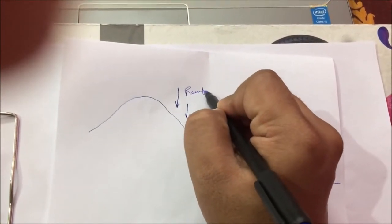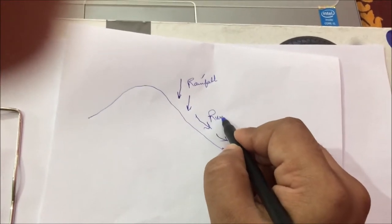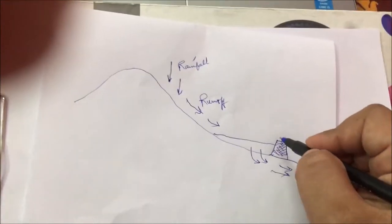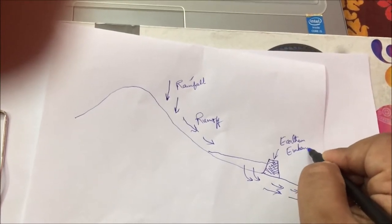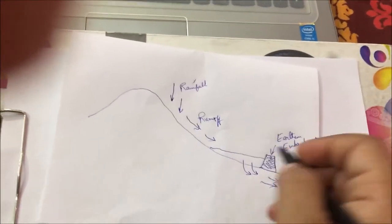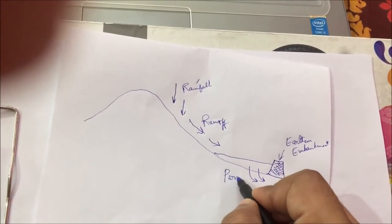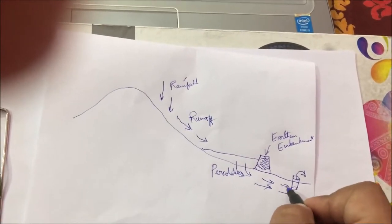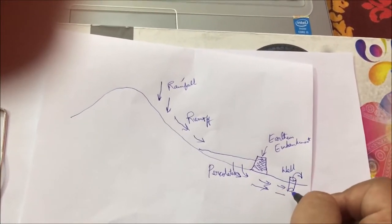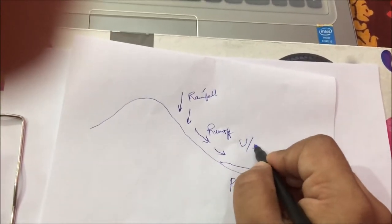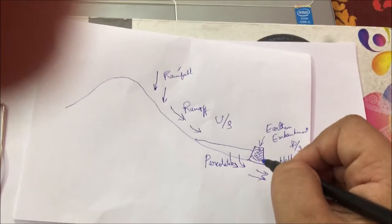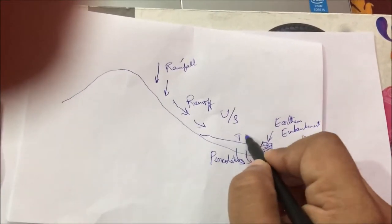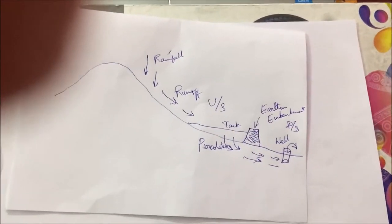Rainfall occurs, producing runoff, and the earthen embankment is constructed through consolidation of earthen materials available locally. Percolation then happens into the groundwater reserves, which become available as a groundwater resource downstream. The upstream area is above the embankment and the downstream area is below it. The overall purpose of this system — which we call a percolation tank — is to recharge the groundwater.